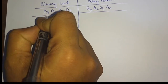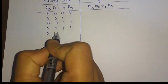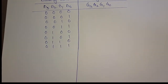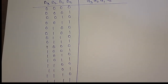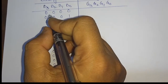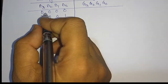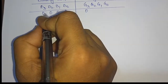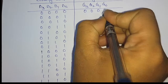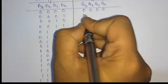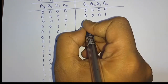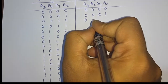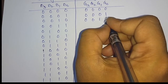Let us write down all the combinations of this four-bit binary number. These are the 16 binary numbers using four-bit representation. Now let us convert these binary numbers to their respective gray codes. Zero is written first: zero plus zero is zero, zero plus zero is zero, zero plus zero is zero. Then for binary 0001: the first digit is zero, second is zero, third is one, and fourth is also one.